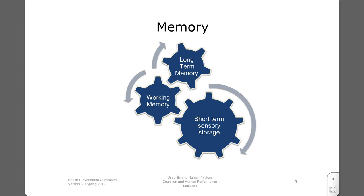It is common to think about memory as consisting of three subsystems: short-term sensory storage, working memory, and long-term memory. Sensory storage can be captured by thinking of the very brief persistence of an image in your visual system after the object is no longer in view. The same can be said for any of the senses.